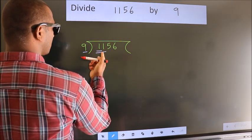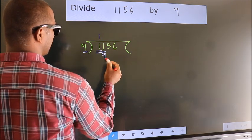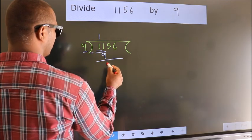A number close to 11 in 9 table is 9 once 9. Now we should subtract. We get 2.